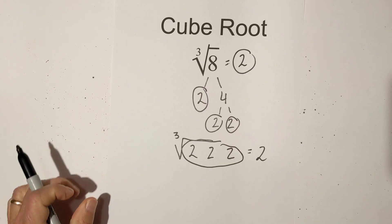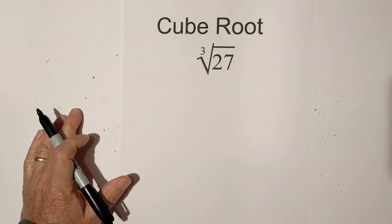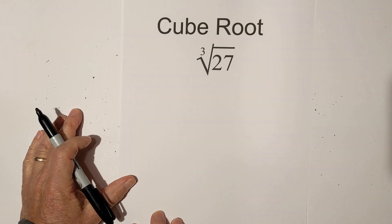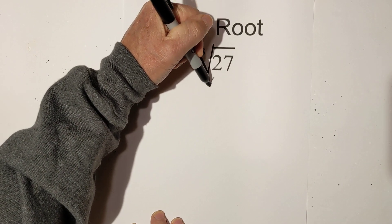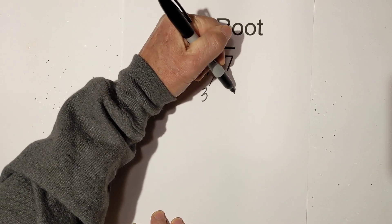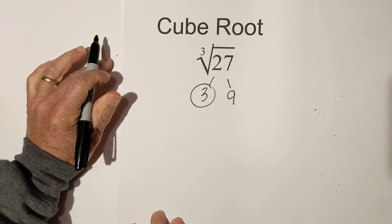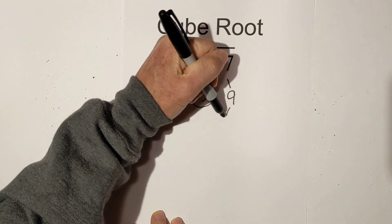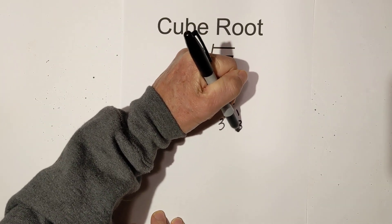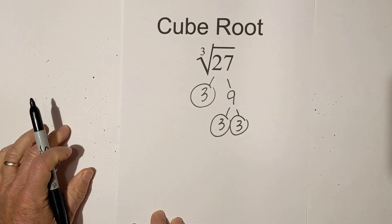Now let's do the same thing for 27. Okay here is the cube root of 27 so we're going to do the same thing. Let's begin with 3 times 9, circle the 3 because it is prime, and then 3 times 3, and so I'm down to all just prime numbers.